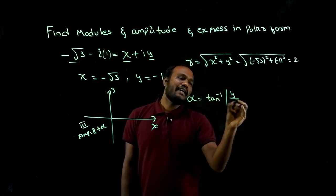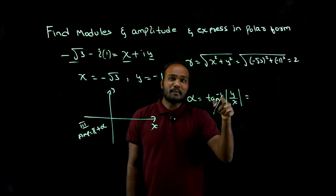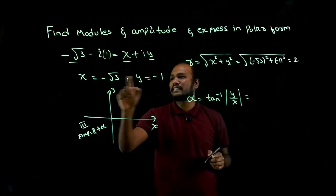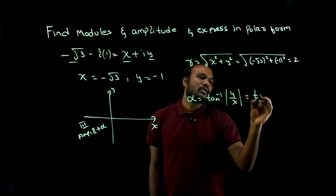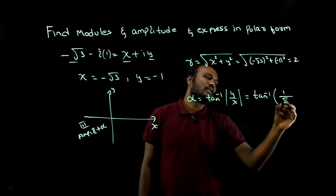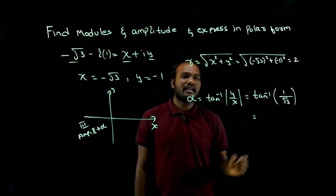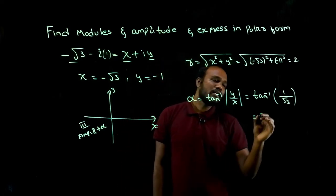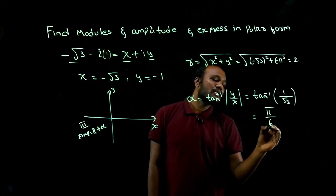We have to know what is alpha. Alpha value is tan inverse of mod y upon mod x. We consider mod because we only take values, not the symbols. So tan inverse of 1 divided by root 3. 1 by root 3 is 30 degrees, so we'll get it as pi over 6.